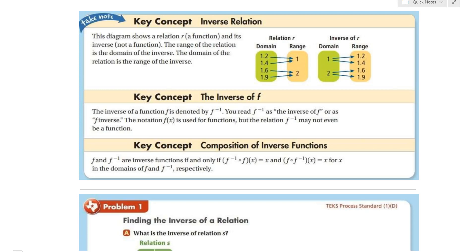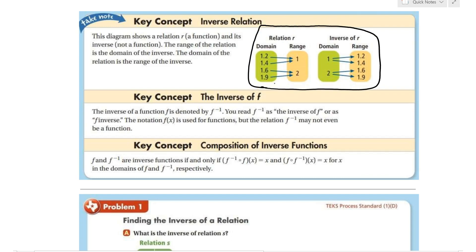The lesson for today is inverse relations. For it to be an inverse, the domain and range will switch positions. Looking at the diagram, it shows a relation R and its inverse — the range of the relation becomes the domain of the inverse, and the domain of the relation becomes the range of the inverse. So the domain and range switch positions.